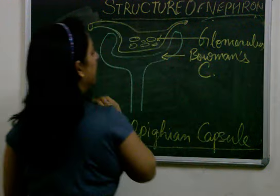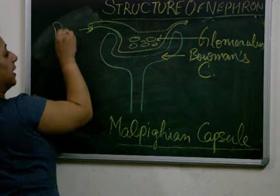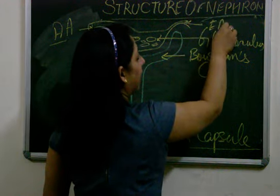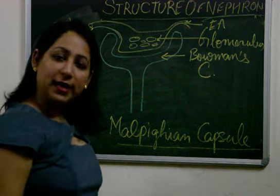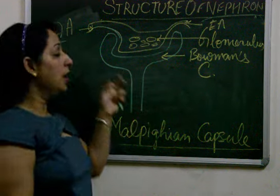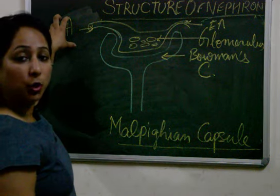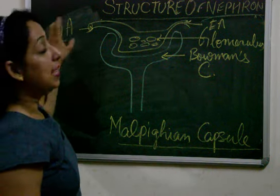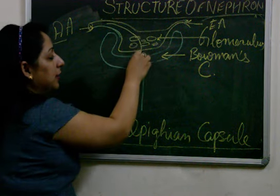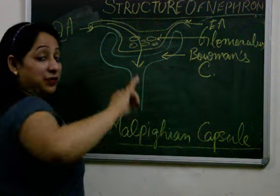This tube is known as afferent arteriole and this tube is known as efferent arteriole. We have already done that the process of ultrafiltration occurs here in malpighian capsule. The blood is passed from afferent arteriole to efferent arteriole through renal artery. This blood comes into the glomerulus, it is filtered out from the glomerulus.